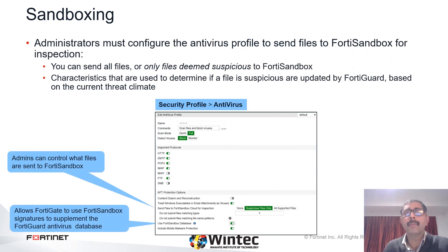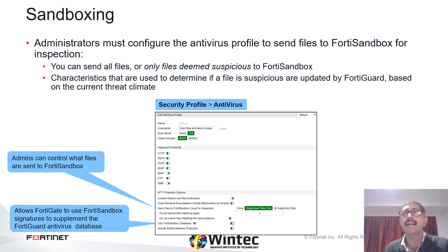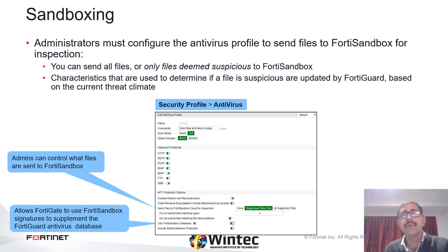FortiOS is smart when it comes to determining what files are sent to FortiSandbox. FortiGuard provides FortiGate with information based on the current threat climate that is used to determine if a file should be deemed suspicious. FortiGate provides the administrator with granular control when determining what type of files are sent to FortiSandbox for further investigation. Administrators also have the option to use the FortiSandbox database in conjunction with the FortiGuard antivirus database to enhance network security. Prior to FortiOS 6.2, enabling the suspicious files only feature was available using CLI mode only, but now you can do that using the GUI as well.